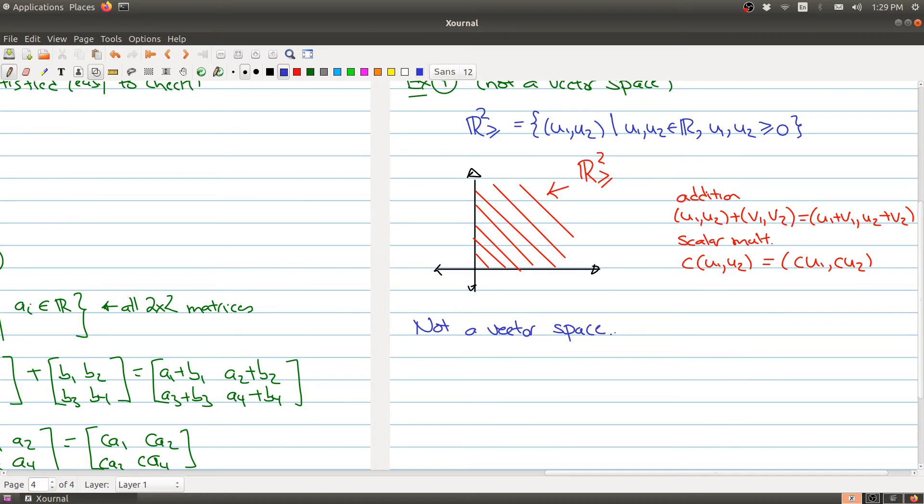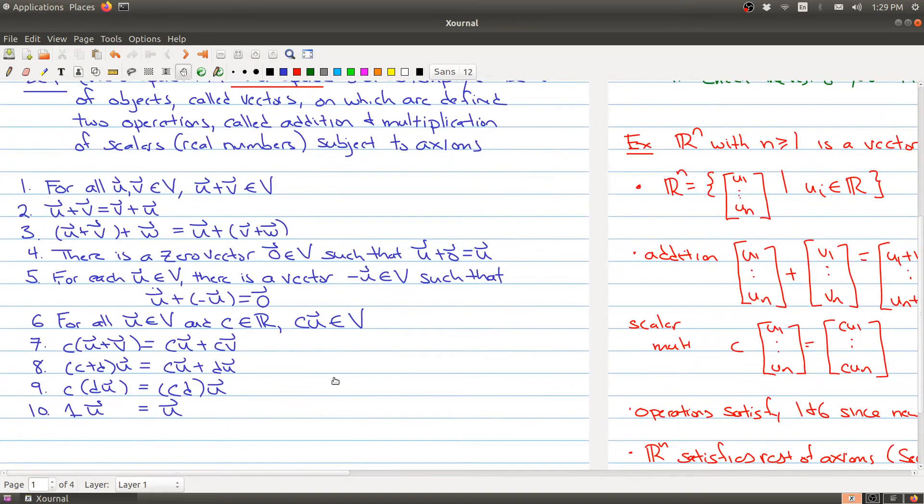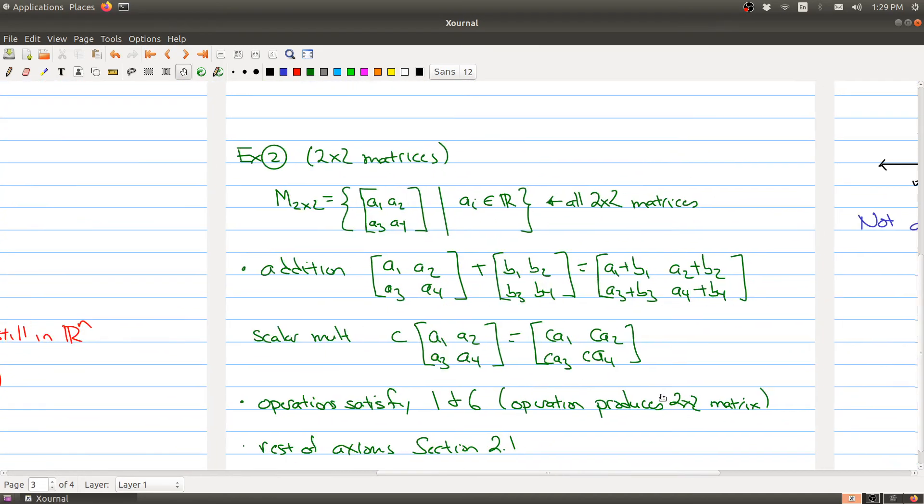So why is that? It's not a vector space. And why? Well, there's a number of reasons, but I'll point out one reason. Because axiom 5 fails. Now, let me just flip back here so you can see what axiom 5 is. Axiom 5 is saying that anytime I take a vector in there, there's another vector that will allow me to add to it and get to zero. Okay, so let me show you why this fails.